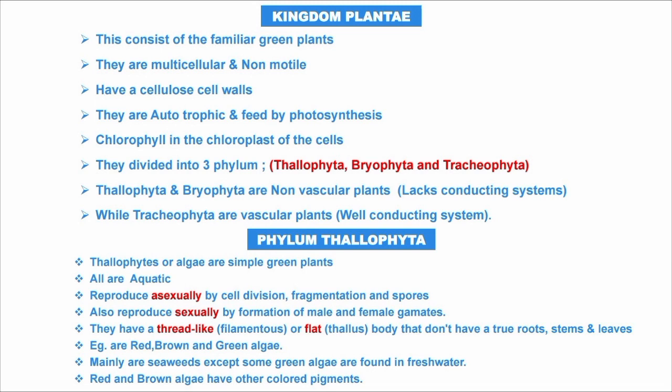Examples include red, brown, or green algae — mainly seaweed, except some green algae found in fresh water. Red and brown algae have other colored pigments. Examples of algae divisions include Cyanophyta (blue-green algae), Chlorophyta (green algae), Euglenophyta, Bacillariophyta (diatoms), Cryptophyta, and Rhodophyta (red algae).